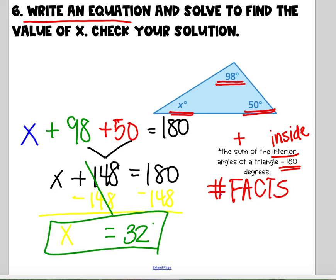So I'm going to go back up to my triangle and put 32 degrees here. And I can check it by knowing that 32 plus 50 plus 98, does that equal 180? Yes, it does.